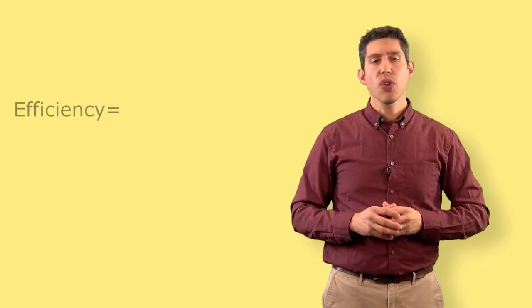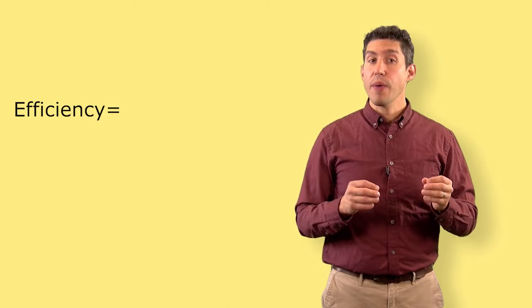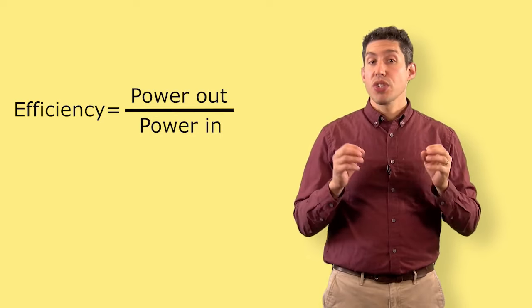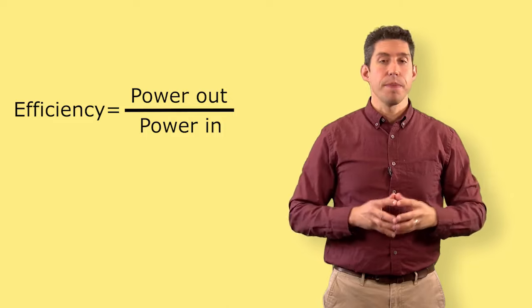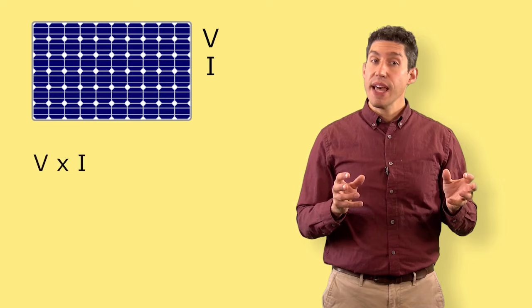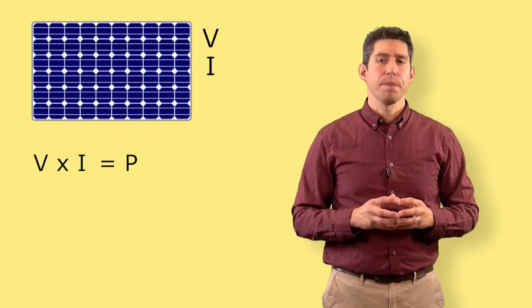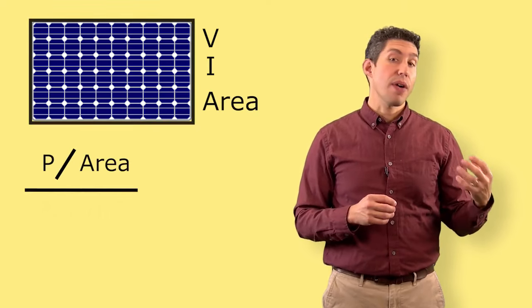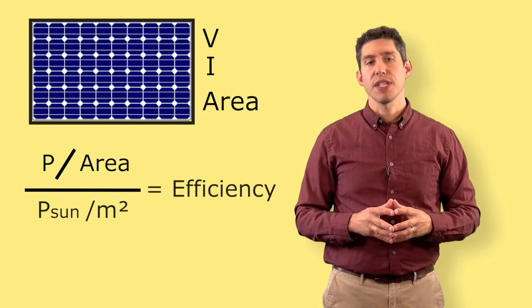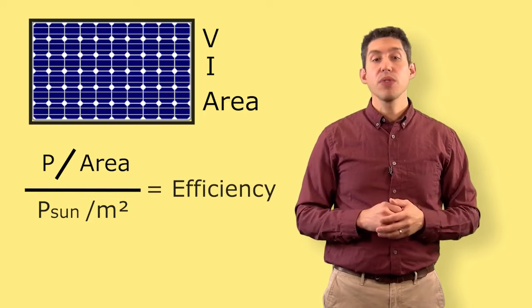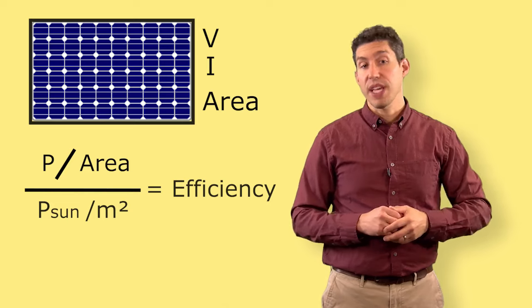If we want to measure the efficiency of a solar panel, we need to know what the power going out is and divide it by the power going in, which is all based on the same unit of area. That's the general definition of efficiency. For a photovoltaic, we can measure the voltage and the current and multiply them together to get the output power, then divide that by the area of the module. We then divide by the power of sunlight per square meter to yield the efficiency. We could do that outside in real time, or we could use the listed efficiency on a manufacturer's specification sheet.